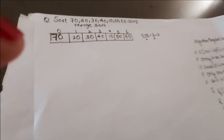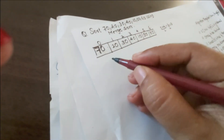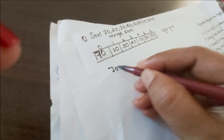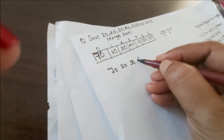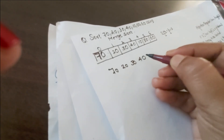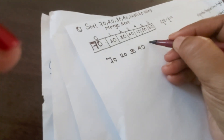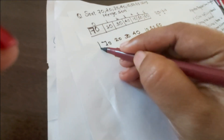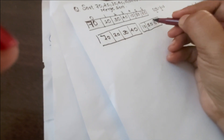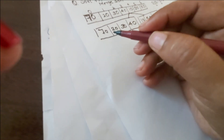We split from position 3, giving us sub-list S1: [70, 20, 30, 40] and sub-list S2: [10, 50, 60]. Next, we have to again split each of these sub-lists further.